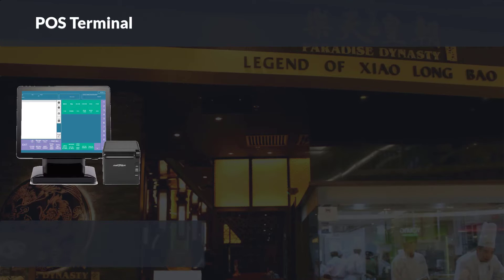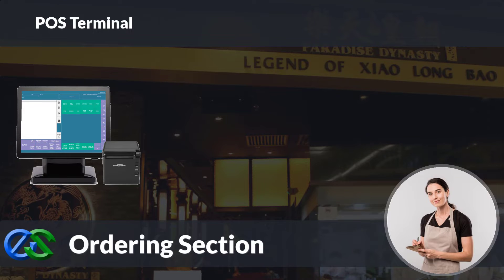You may add an ordering terminal for your floor staff to place orders through the ordering terminal. A receipt printer is used to print out the customer's present bill for payment collection.